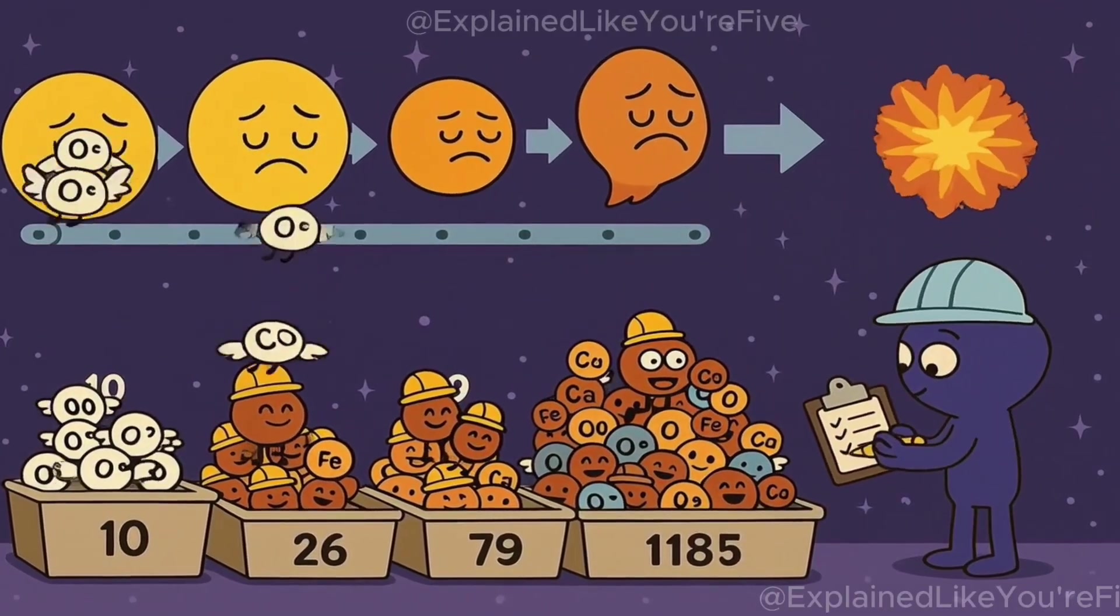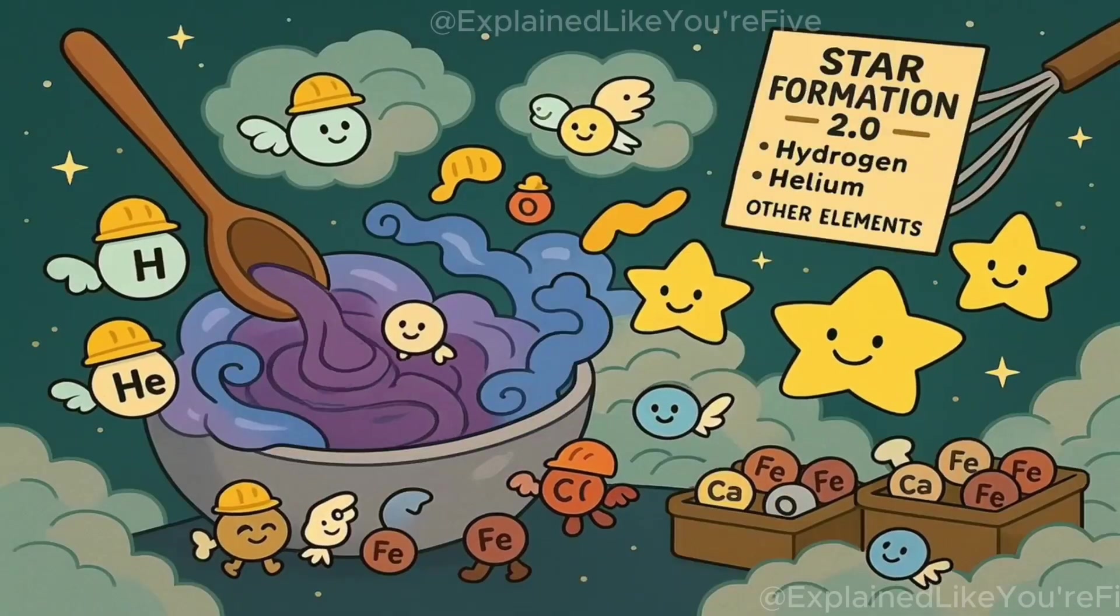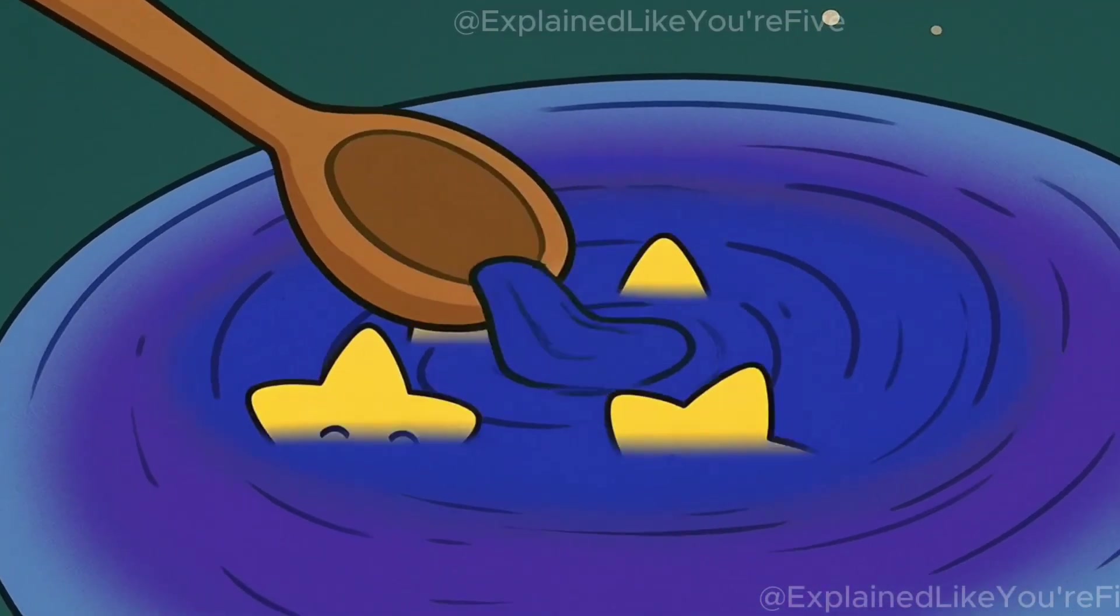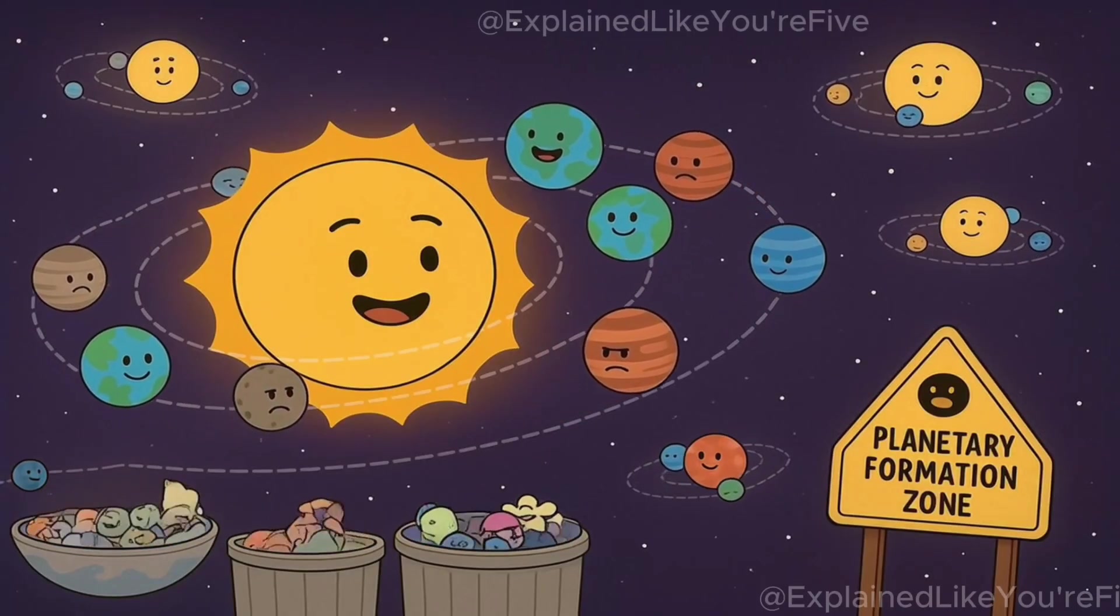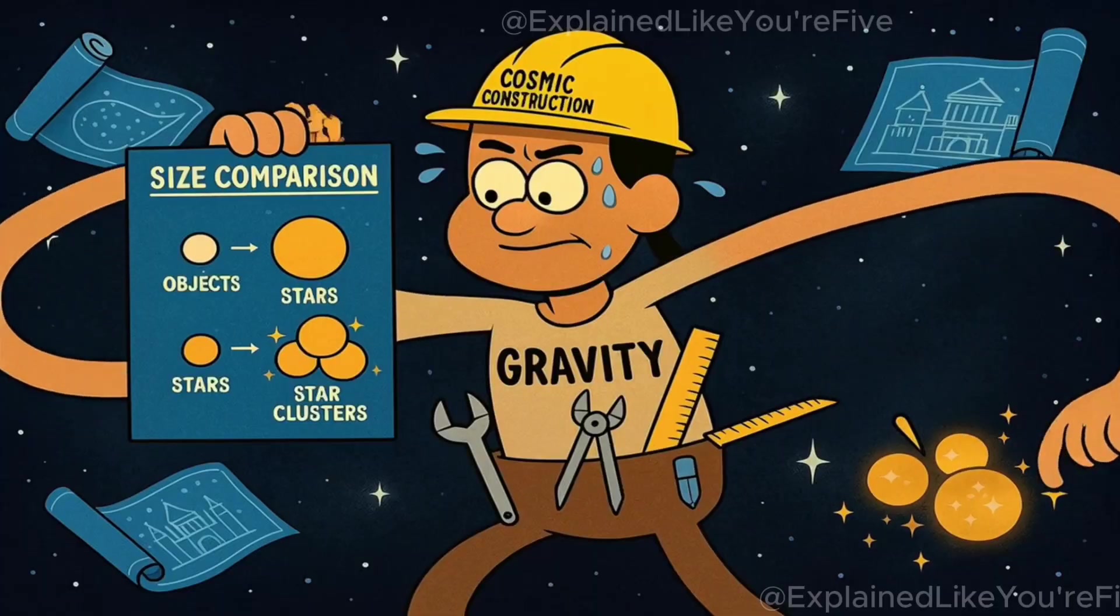As more and more stars formed, lived, and died, they created more and more heavy elements. These elements mixed with the hydrogen and helium gas clouds, and new generations of stars formed from these enriched gas clouds. Some of these newer stars had planets forming around them, including our own sun and the planets in our solar system.